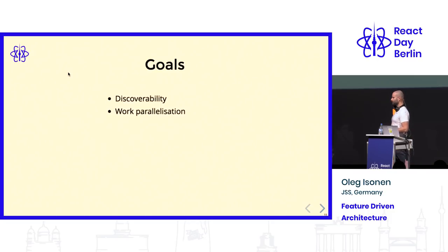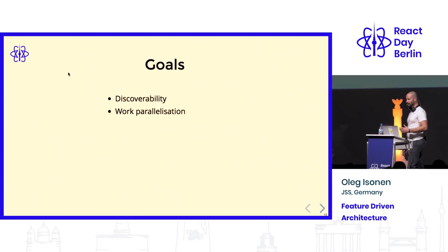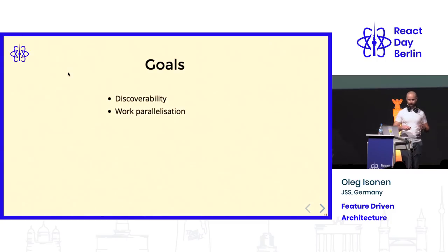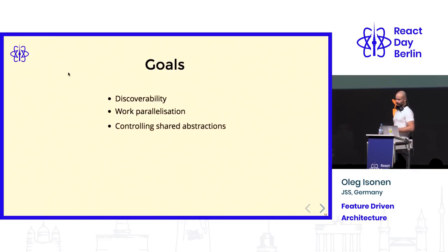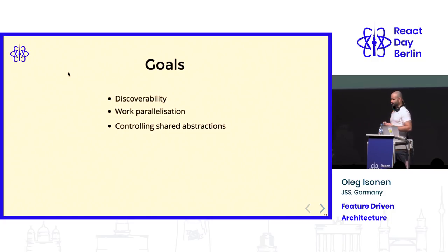Second goal is work parallelization. Large software is not created by a single person, at least usually. You want to be able to work in parallel with many people. Even if you work alone, you still want to be able to pause one feature and start working on another and then come back without having to resolve conflicts and rewrite everything. Controlling shared abstractions — shared abstractions is anything you share between multiple consumers and they are a huge source of bugs. We need to be cautious about using them.